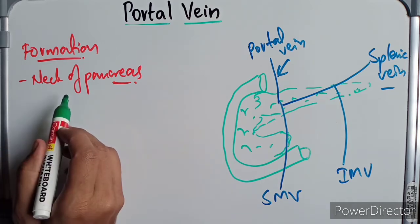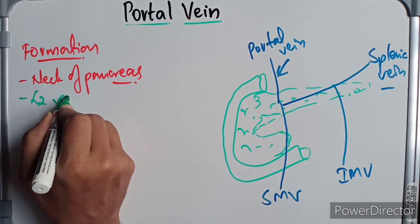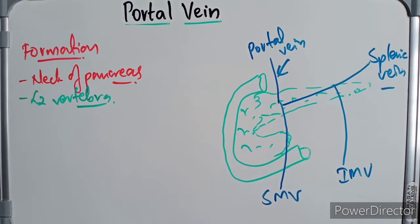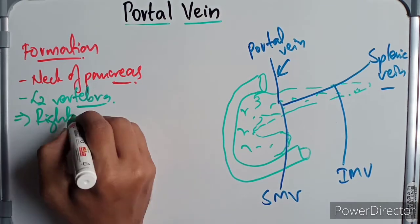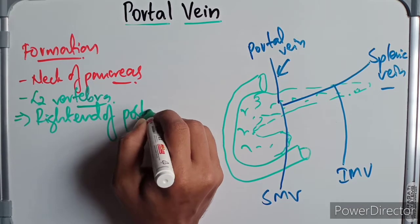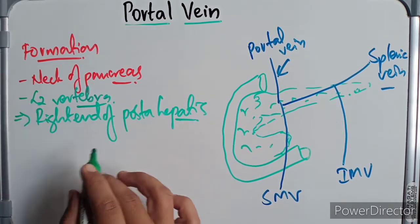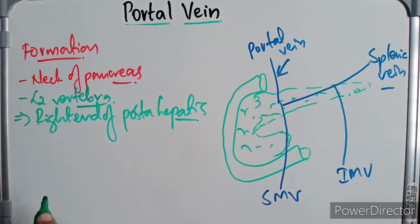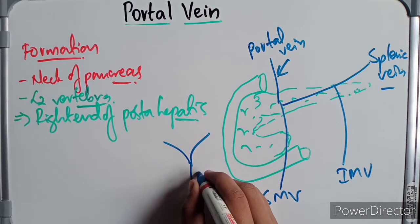The portal vein is formed behind the neck of the pancreas by the union of the superior mesenteric vein and the splenic vein at the level of the L2 vertebra. It runs upward and slightly to the right, and ends at the right end of the porta hepatis, where it divides into the right branch and the left branch.